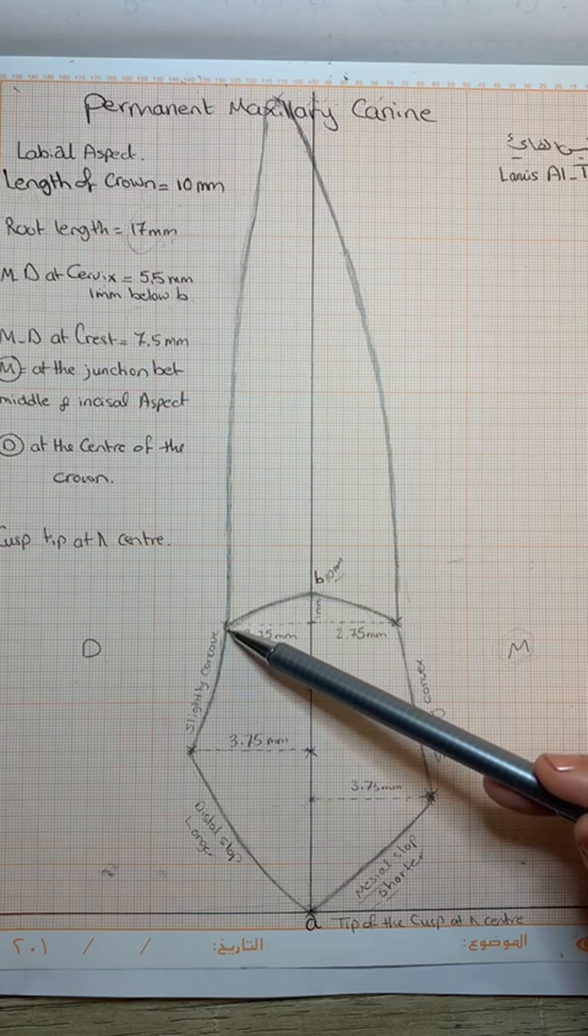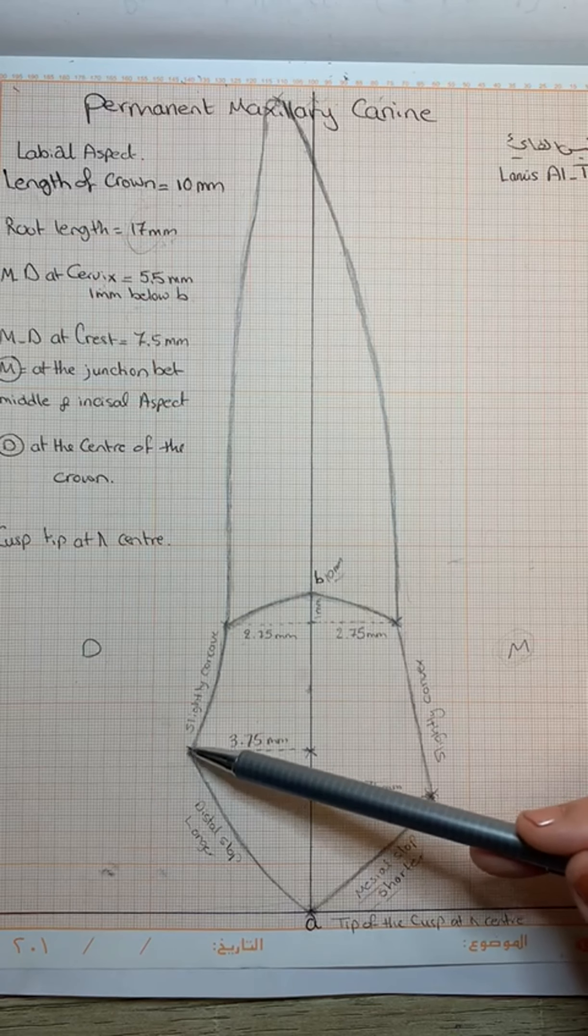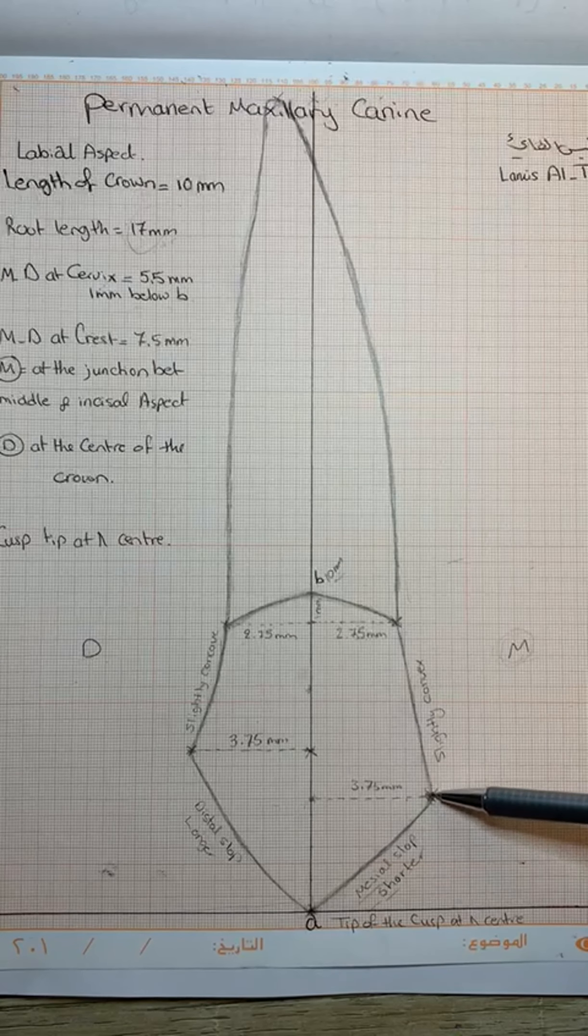And the distal outline will be slightly concave, from the cervix to the crest. The contact area, distally, will be at a higher level than the mesial side.